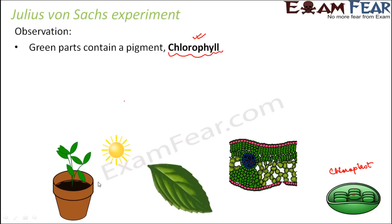The starch synthesized in the presence of light was used up in the dark during respiration. It is similar to preparing enough food in the morning so you don't need to cook again at night — you keep eating it until it is gone. Similarly, plants prepare food in the presence of sunlight, and when it is dark they cannot prepare more food, so the stored food gradually disappears.